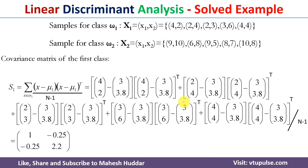Coming to the second step, we need to calculate the covariance matrix for each class. The first covariance matrix S1 equals the summation of (x minus mu1) multiplied by (x minus mu1) transpose, divided by n minus 1, for all examples in that class. Here n minus 1 is the sample covariance denominator.